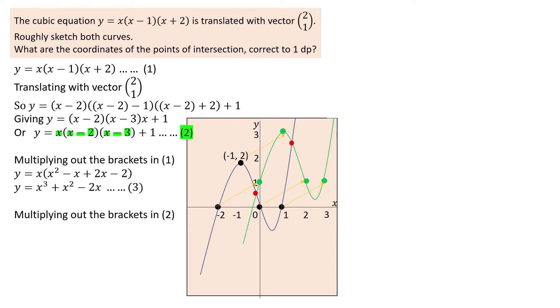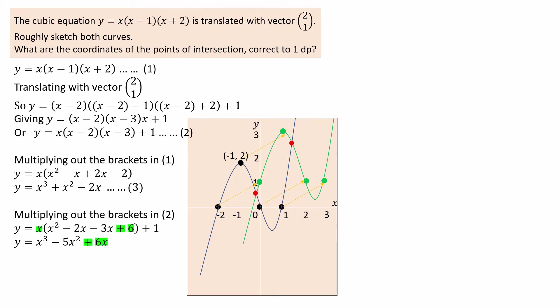Now multiply out the brackets in equation 2, that is (x minus 2)(x minus 3): x times x gives x squared, negative 2 times negative 3 gives plus 6, the two middle terms give negative 2x, and the two outer terms give negative 3x. Multiplying by x gives x cubed; minus 2x minus 3x simplifies to minus 5x squared; and x times plus 6 gives 6x. Then add the 1 and label as equation 4.